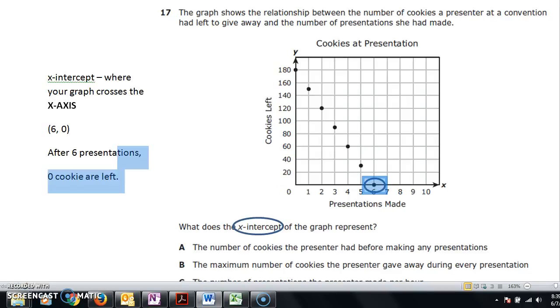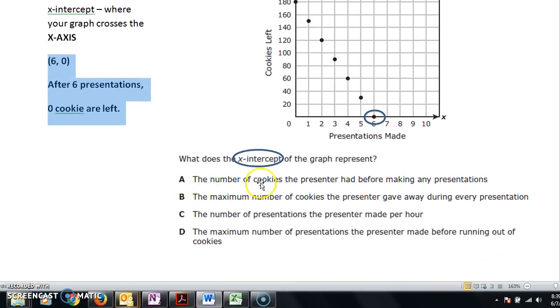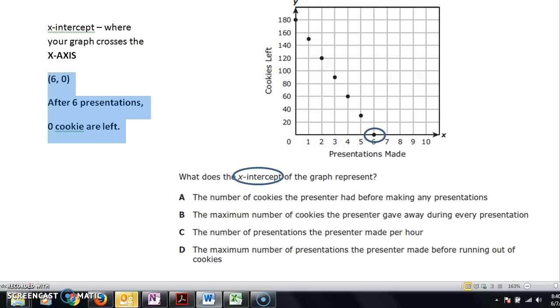That's what this means. That's what our x-intercept means. Let's go to the answer choices. The number of cookies the presenter had before making any presentations. That's not true. This is at 6 presentations.